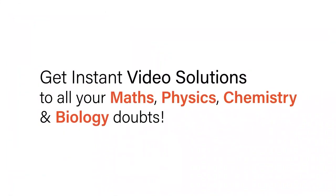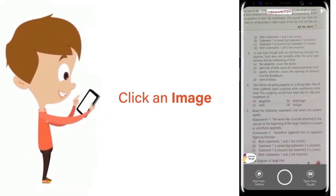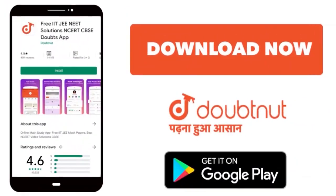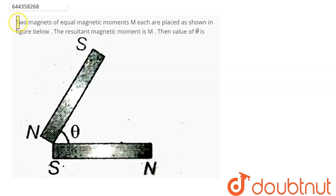With Doubtnet get instant video solutions to all your maths, physics, chemistry and biology doubts. Just click the image of the question, crop the question and get instant video solution. Download Doubtnet app today. Question is: two magnets of equal magnetic moment M each are placed as shown in the figure below. The resultant magnetic moment is M. The value of theta is...